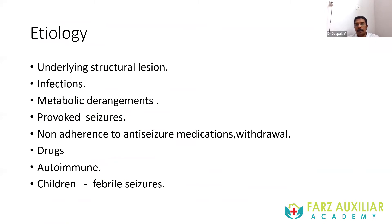One of the most important classifications is based on etiology, because etiology is very important for management. Status seizure can occur due to an underlying structural lesion, infections like encephalitis or meningitis, or metabolic derangements like hepatic encephalopathy, uremia, hyponatremia, or hypokalemia. Provoked seizures have an identifiable cause, while unprovoked seizures have no evident cause. One of the most common causes of breakthrough seizures is non-adherence to anti-seizure medications.